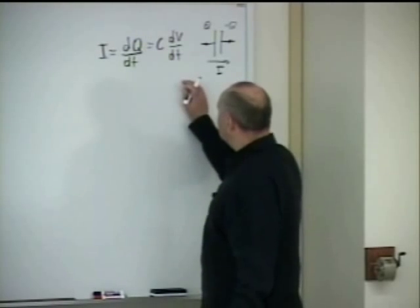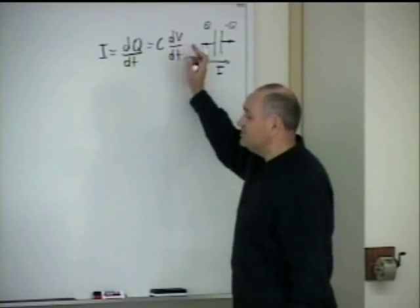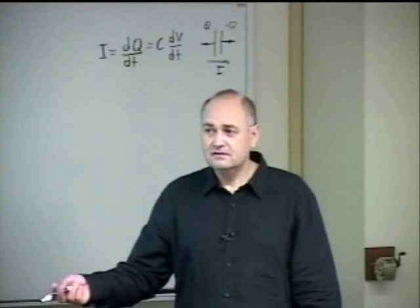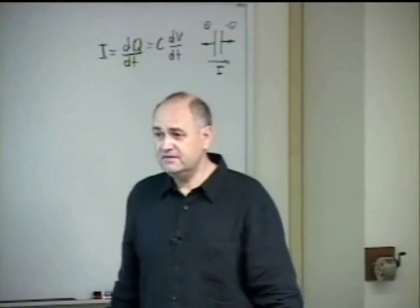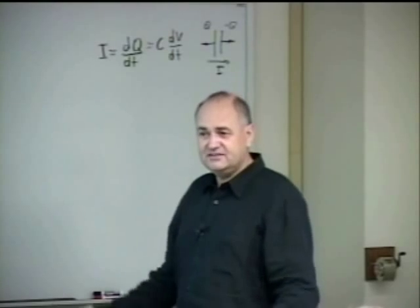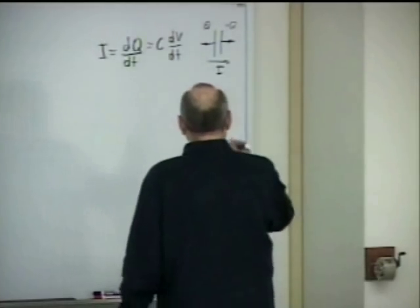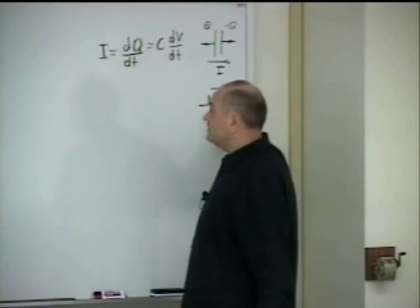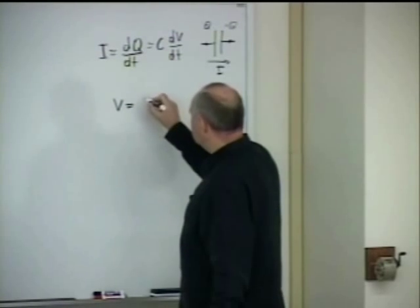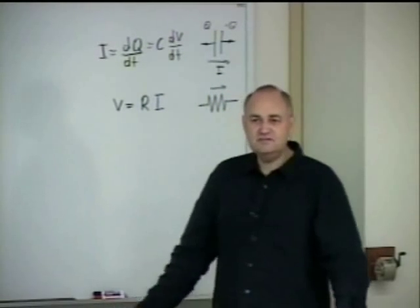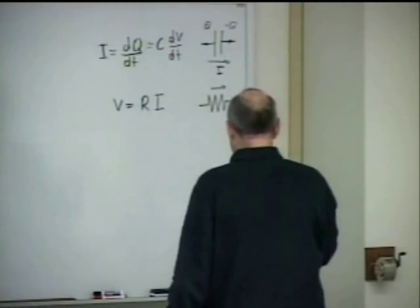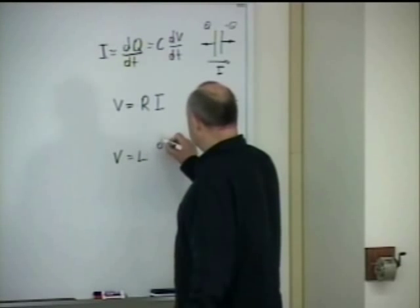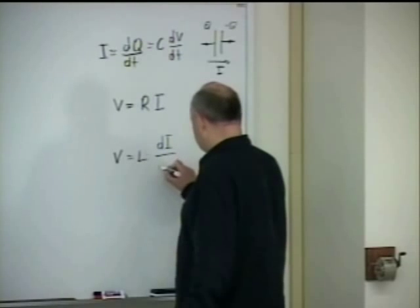We can also invert that relationship: potential difference across a capacitor is proportional to the integral of current. For a resistor, potential difference is directly proportional to current and vice versa. For an inductor, potential difference is proportional to the rate of change of the current flowing through it.